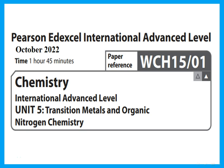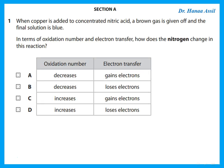Hello, this is Dr. Hannah Assil, and this is Unit 5 October 2022 of the Pearson Edexcel International A-level paper. Let's take a look at the questions and discuss the answers. The first question says: when copper is added to concentrated nitric acid, a brown gas is given off and the final solution is blue. In terms of oxidation number and electron transfer, how does the nitrogen change in this reaction?